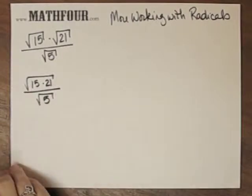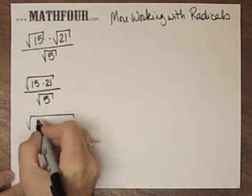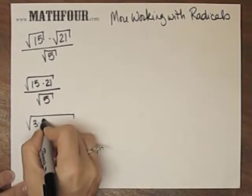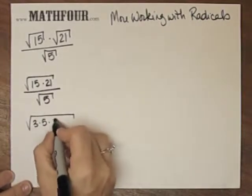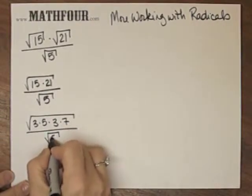And I can factor this 15 times 21 into 3 times 5 times 3 times 7 over root 5.